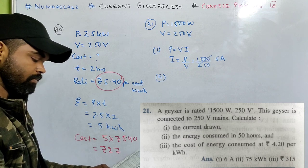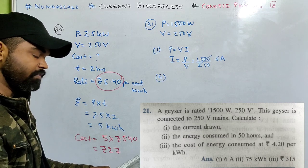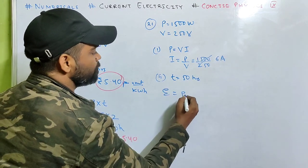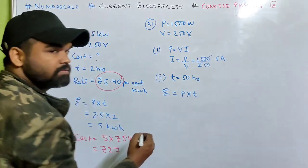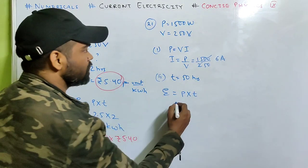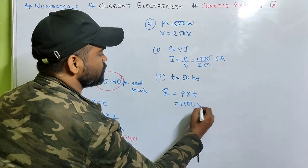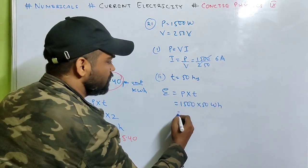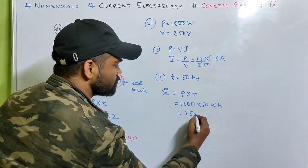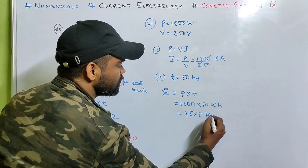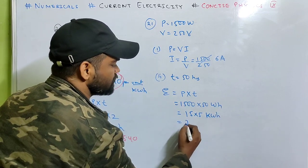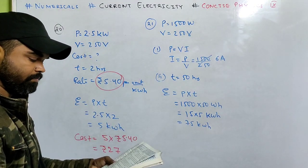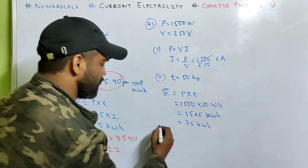Part 2: the energy consumed in 50 hours. Time is 50 hours, so what will be energy? P into T. P is 1500, T is 50, this is watt hour. So in kilowatt hour we'll divide by 1000, so 15 into 5, that's 75 kilowatt hour. That is the energy.